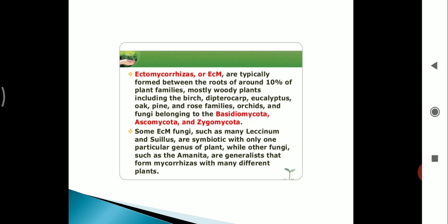Ectomycorrhizae are typically formed between the roots of around 10% of plant families, mostly woody plants including the birch, dipterocarp, eucalyptus, oaks, pine, and rose families, and fungi belonging to the basidiomycota, ascomycota, and zygomycota. Some ectomycorrhizae fungi such as many Leccinum and Suillus are symbiotic with only one particular genus of plant, while other fungi such as Amanita are generalists that form mycorrhizae with many different plants.